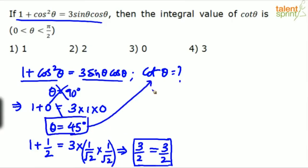Now substitute theta equals 45 to get the answer. The answer should be cot 45 degrees. Cot 45 is cos 45 by sin 45, which is 1 by root 2 divided by 1 by root 2, and that equals 1. So the answer here is option 1.